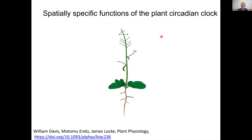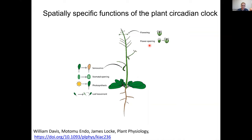The circadian clock controls processes throughout the day and night, but also in various particular parts of the plant. It can modulate flowering time, flower opening during the day, senescence, stomatal opening, photosynthesis, leaf movement, lateral root emergence timing, and even microbiome composition by modulating the composition of root exudates. So it's clear that, as Alex said, it's this pervasive regulator of development in plants.